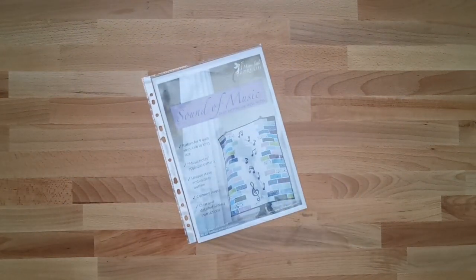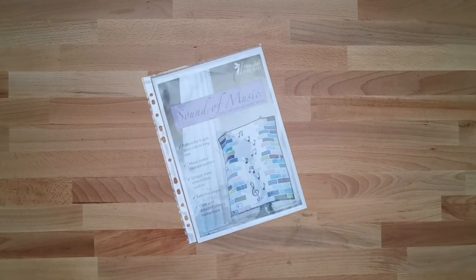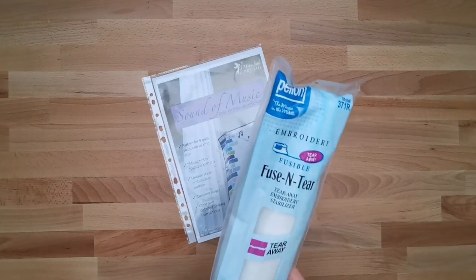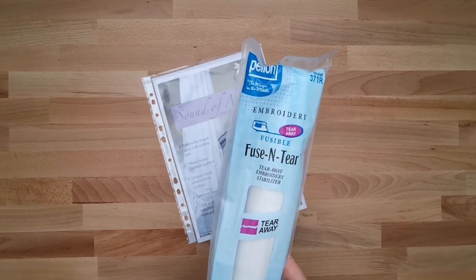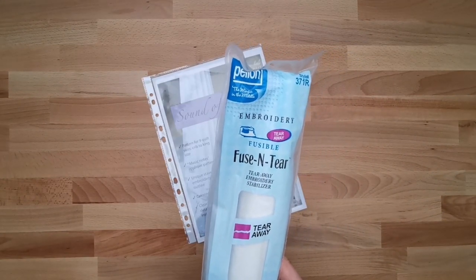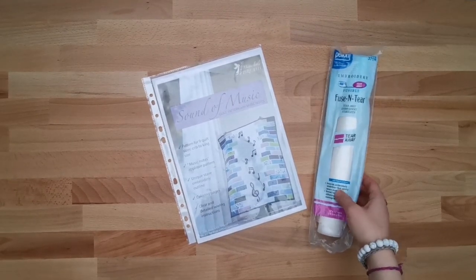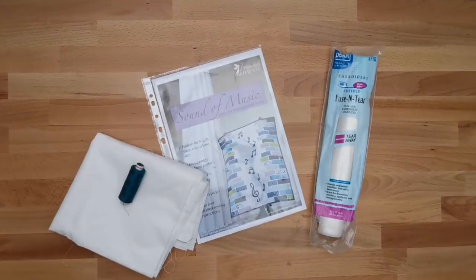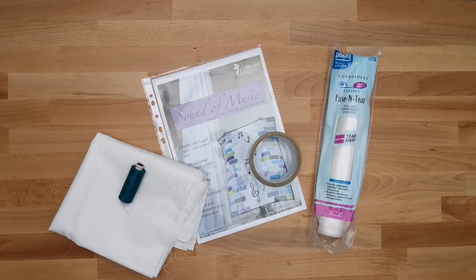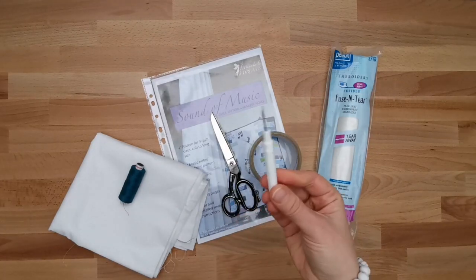To make this stave you will need printed outline from the Sound of Music quilt pattern. Make sure to print it actual size. You will also be using embroidery stabilizer. I'm using Pellon Fuse-N-Tear but you can also use other brands. You will also need some fabric and thread, tape, scissors and a seam ripper.